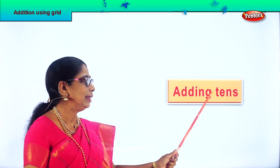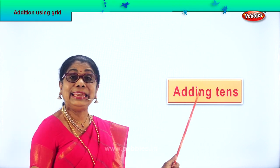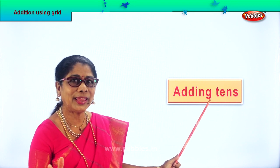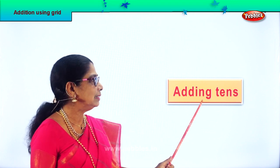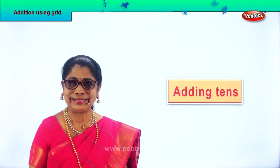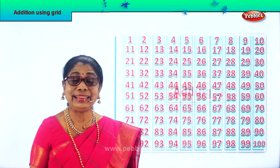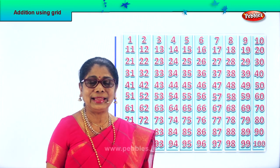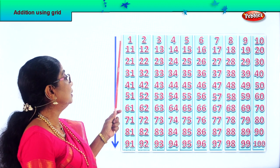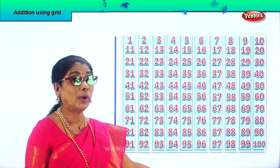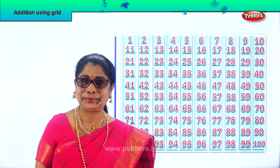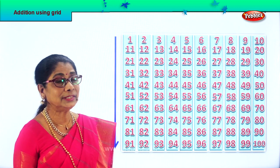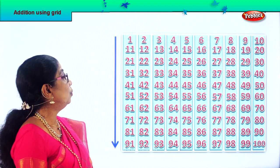Now first we are going to be adding tens — adding tens using the grid. All you need is to just be a little alert. Now look at this: in the grid you have numbers 1 to 100. Yes, you have numbers 1 to 100.